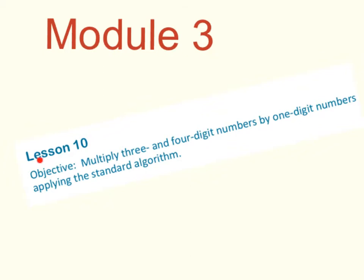Module 3, Lesson 10. Objective: multiply 3 and 4 digit numbers by 1 digit numbers applying the standard algorithm.